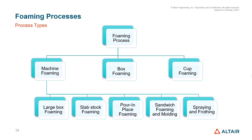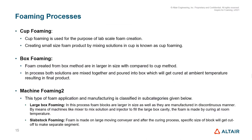Machine foaming can be large box foaming, slab stock foaming, pour-in-place foaming, sandwich foaming and molding, as well as spraying and frothing. There are some other processes also which are used. Let us go into the details of these processes and understand more about them.